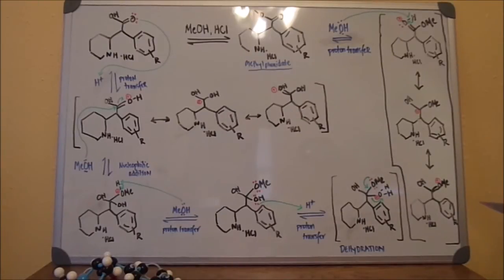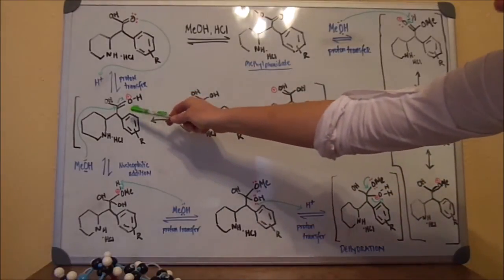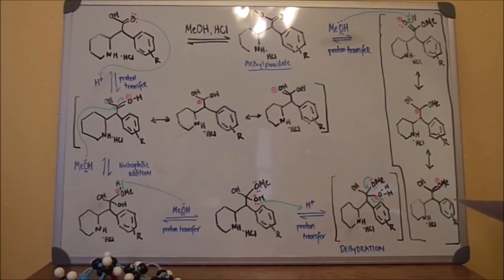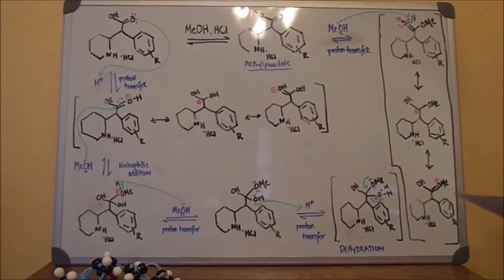Afterwards, the methanol attacks the carbonyl, up here, via nucleophilic addition. At the same time, the pi bond breaks to produce the tetrahedral intermediate, as seen in the lower left hand corner.